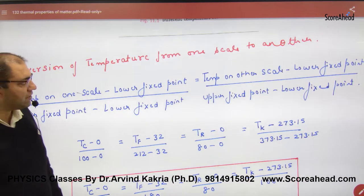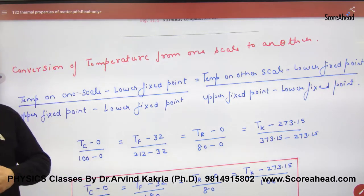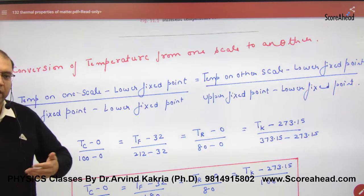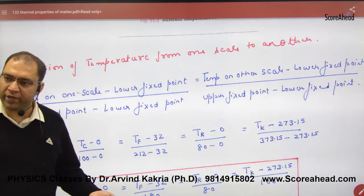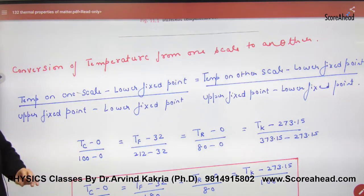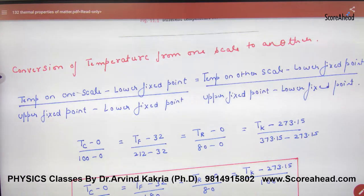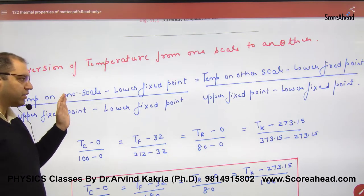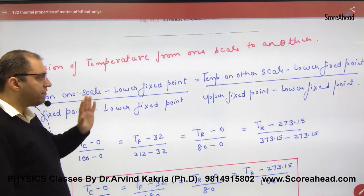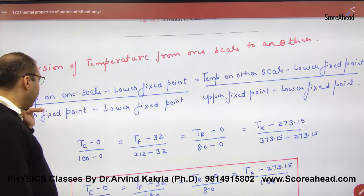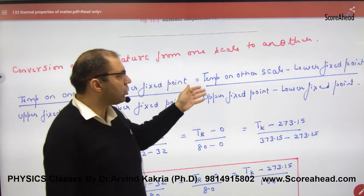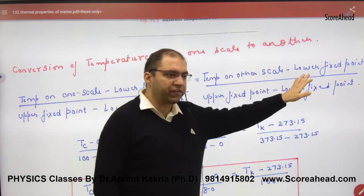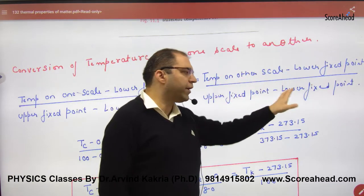Conversion of temperature from one scale to another uses a standard important formula. Temperature on one scale minus lower fixed point, divided by upper fixed point minus lower fixed point, equals temperature on other scale minus lower fixed point, divided by upper fixed point minus lower fixed point.